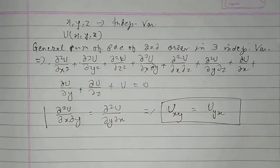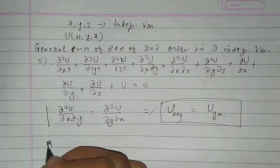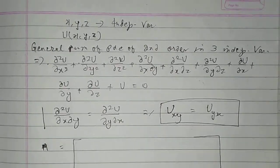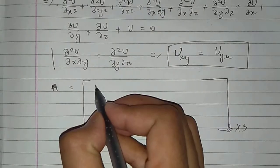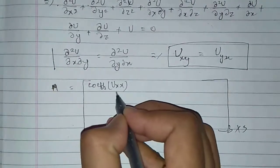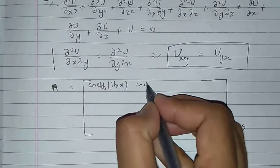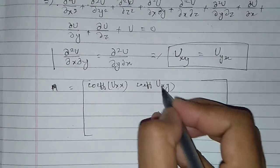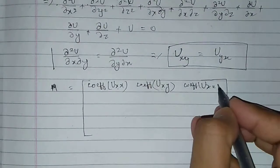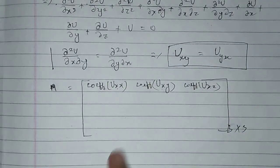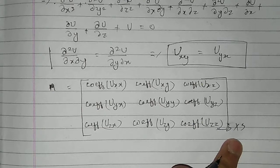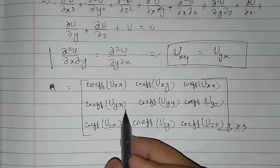In the process of classifying, we first make a 3×3 matrix A having elements that are the coefficients of the second-order terms. The elements are: coefficient of u_xx (del²u/dx²), coefficient of u_xy (del²u/dxdy), coefficient of u_xz (del²u/dxdz), and similarly all other second-order partial derivative coefficients.